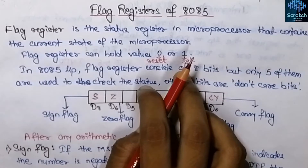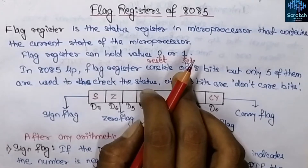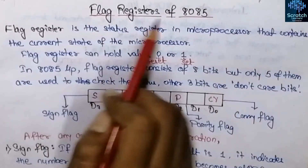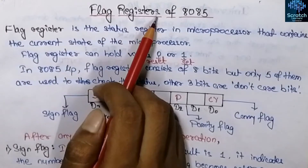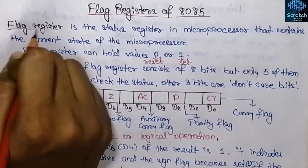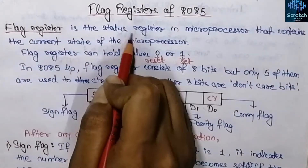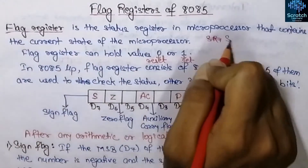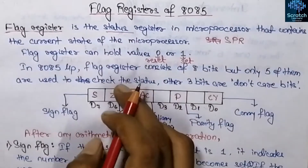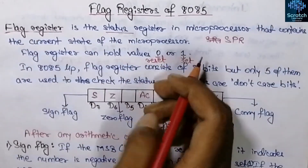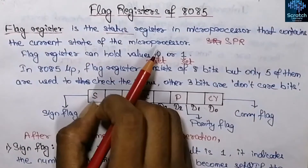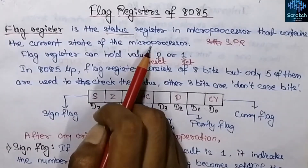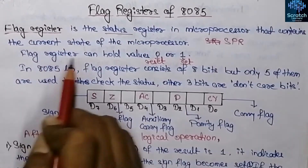In the last videos we have discussed about the block diagram of the 8085 microprocessor where we have seen there were many general purpose registers and special purpose registers. This flag register is one of the special purpose registers. A flag register is the status register in a microprocessor that contains the current state of the microprocessor. After any arithmetic or logical operation, the status of the resultant bit is stored in the flag register.